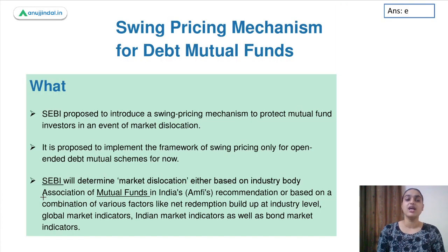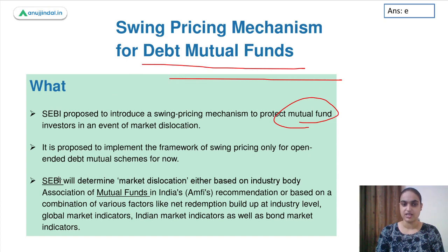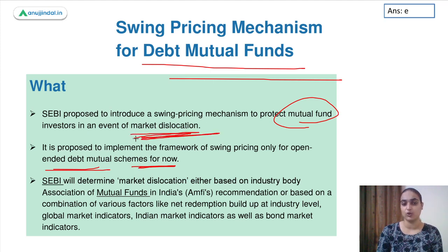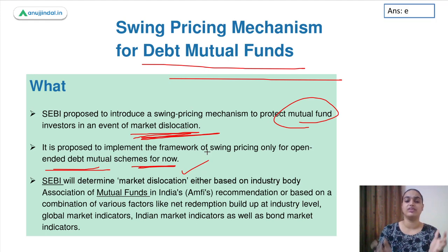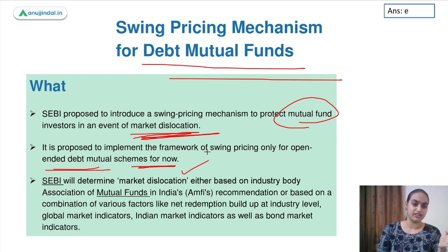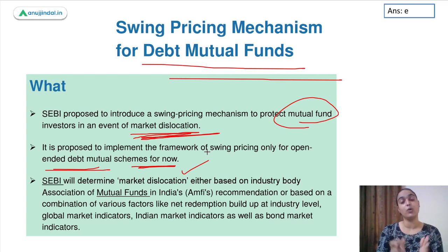Swing pricing is being discussed because SEBI has recently proposed this mechanism for mutual funds, especially the open-ended debt mutual funds. It is proposed to implement the framework of swing pricing only for open-ended debt mutual funds as of now. This mechanism is to be mandatorily followed in the event of market dislocation. SEBI will determine when the market is dislocated — based on the recommendation of the mutual fund association AMFI or on redemption levels, global and Indian market indicators, and numerous other factors.